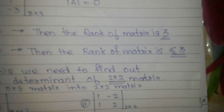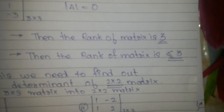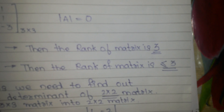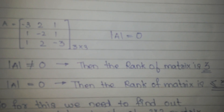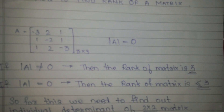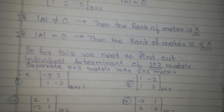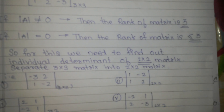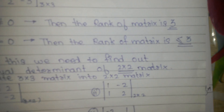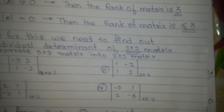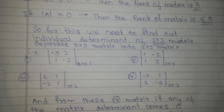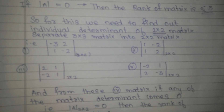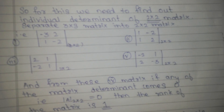then the rank of your matrix is going to be equal to or less than 3. Since we have got 0 as the determinant, our rank of the matrix is going to be equal to or less than 3. So to find out the exact rank of the matrix, we have to do some additional procedures.